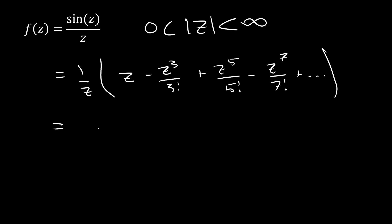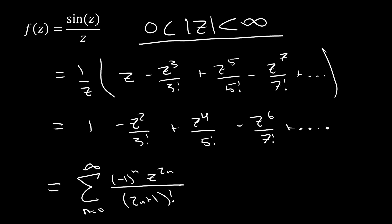With that, we're going to get 1 minus z squared over 3 factorial plus z to the 4th over 5 factorial minus z to the 6th over 7 factorial and so on. We can actually rewrite this in a condensed form just like that. This is still true on our domain up here.